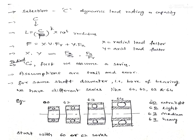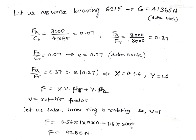For single row deep groove ball bearings, the inside diameter bore remains the same across series, but as the series number increases, the external diameter and width change, giving more load carrying capacity. The C₀ value is selected by choosing a bearing series in a trial-and-error procedure. We will start with the 6215 series (series 2 = light series, 6 = single row deep groove ball bearing).